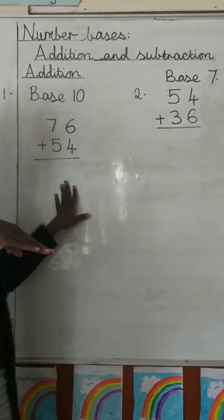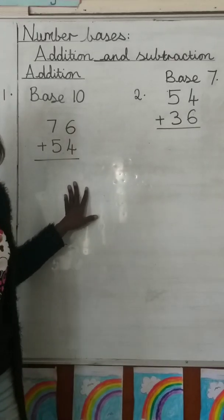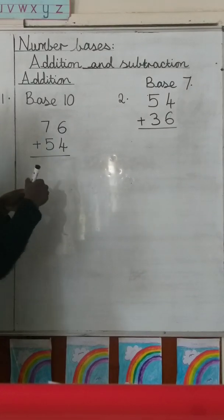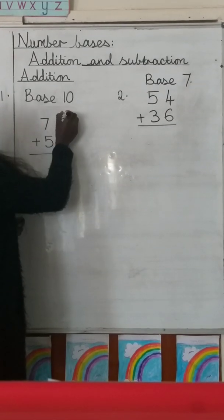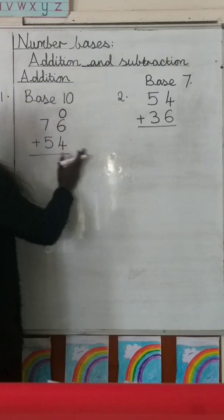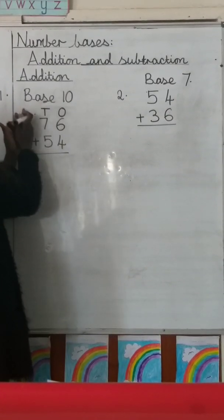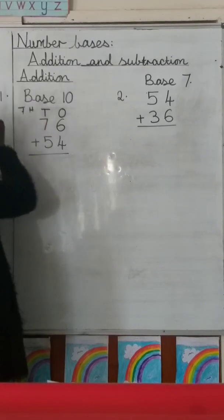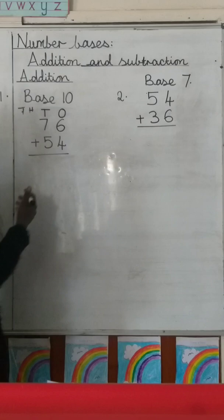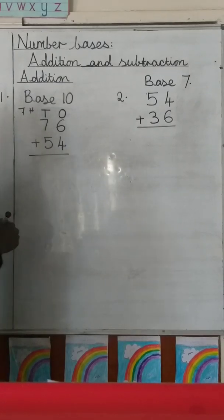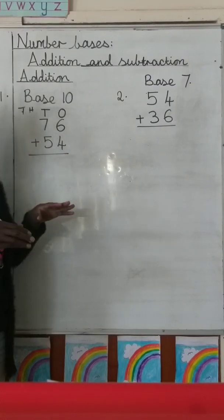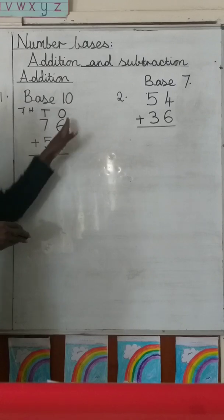Base 10 is the base that we're familiar with. You have to look at the place values — these are the ones at the end, and the next ones are the tens. If we had more numbers there would be hundreds, thousands, ten thousands, and so on. In base 10 we only have two digits here: 76 and 54. These are the numbers that we are adding.